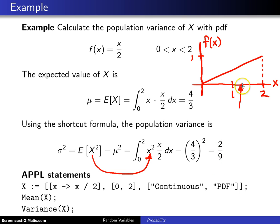So 2 ninths is a measure of how spread out this distribution is relative to its mean. If it were tightly clustered around 4 thirds you would get a smaller value here. If it's spread way out you would get a larger value here.